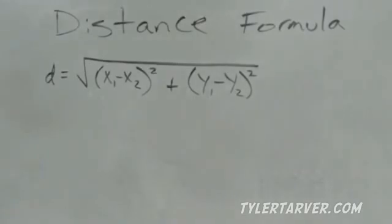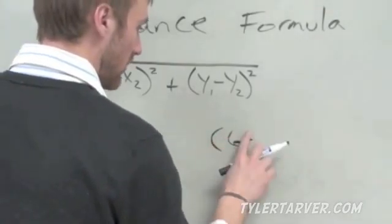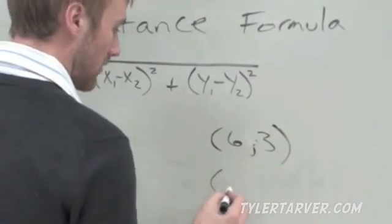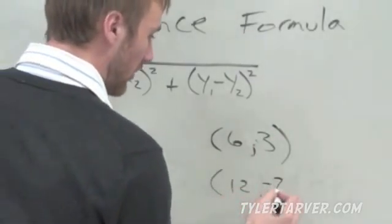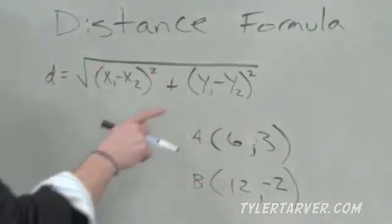That will find your coordinates from two points. Let's say our points are 6, 3, and 12, negative 2. We're finding the distance from this point A to point B. We want to find how far it is from this point on our coordinate plane on our graph to this point right here.